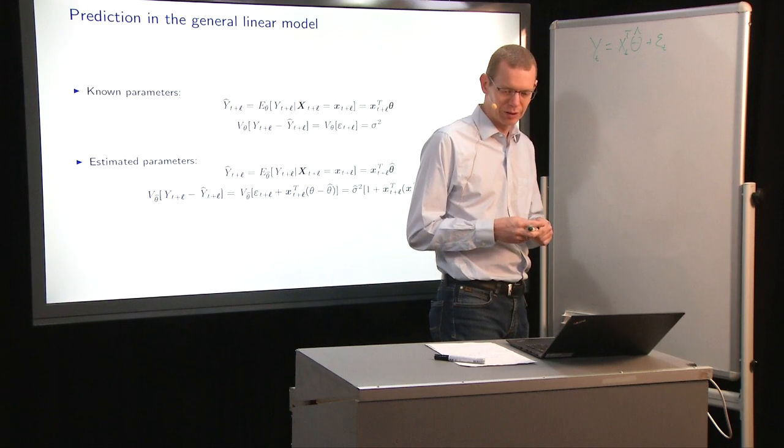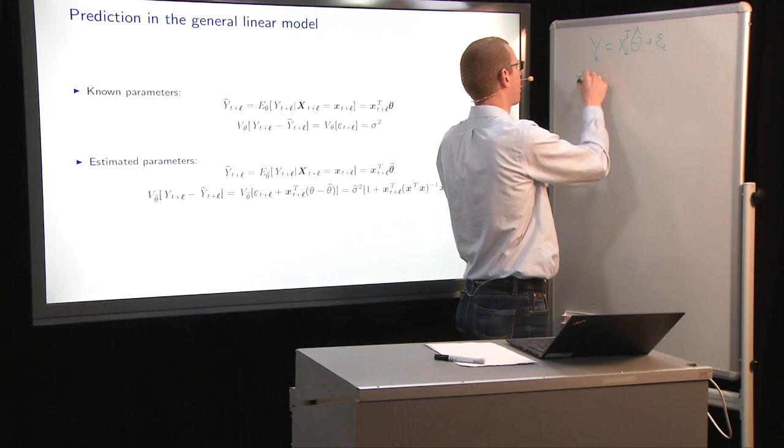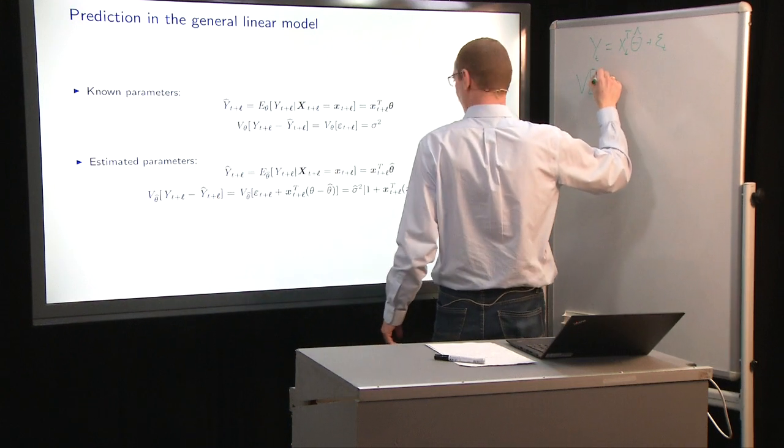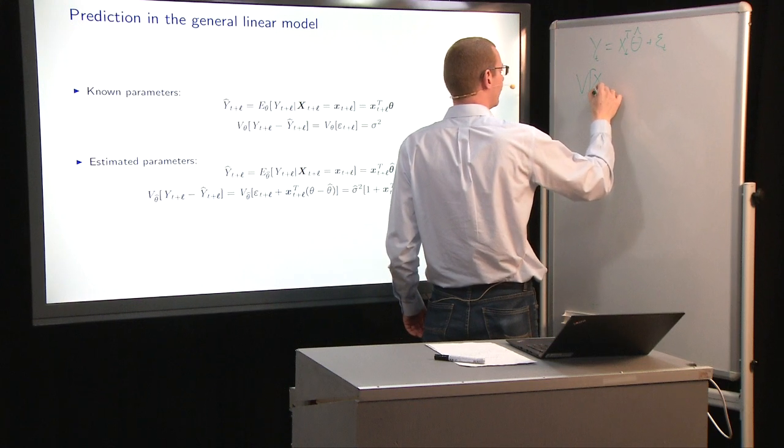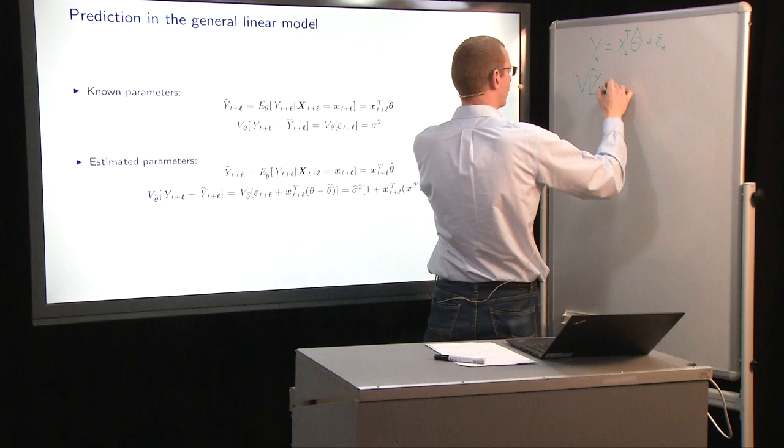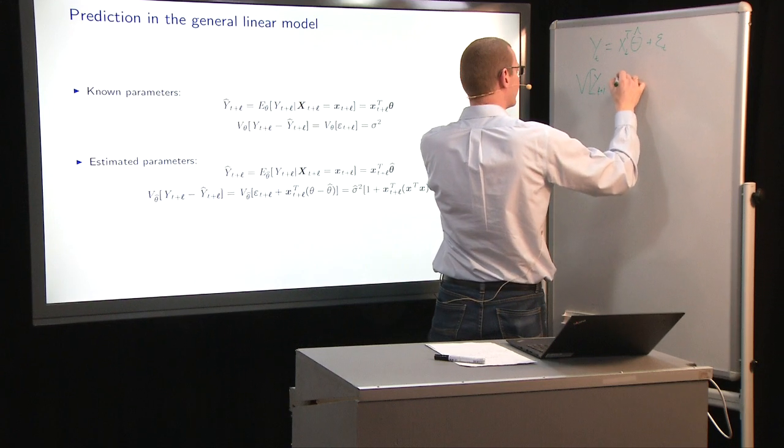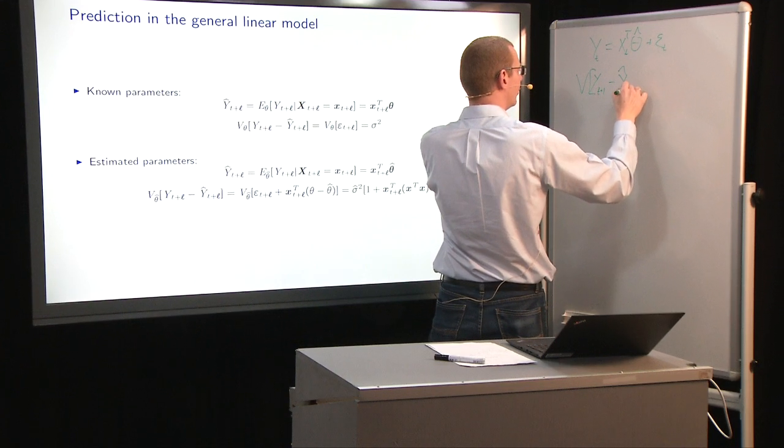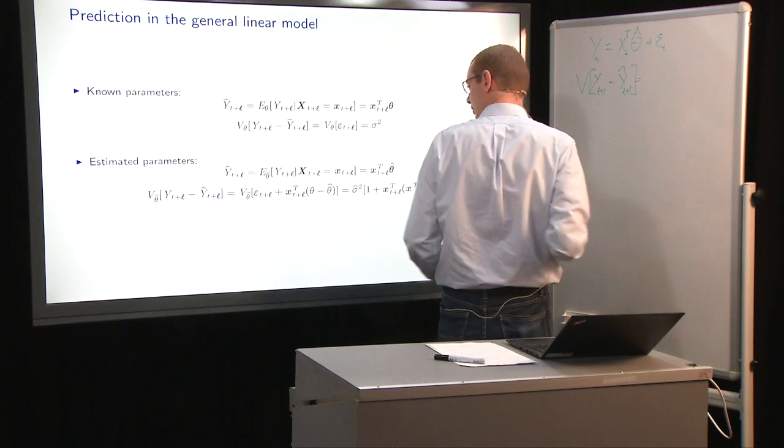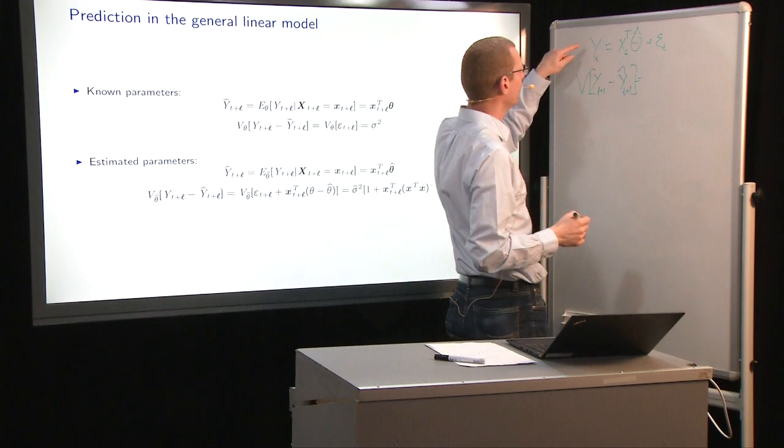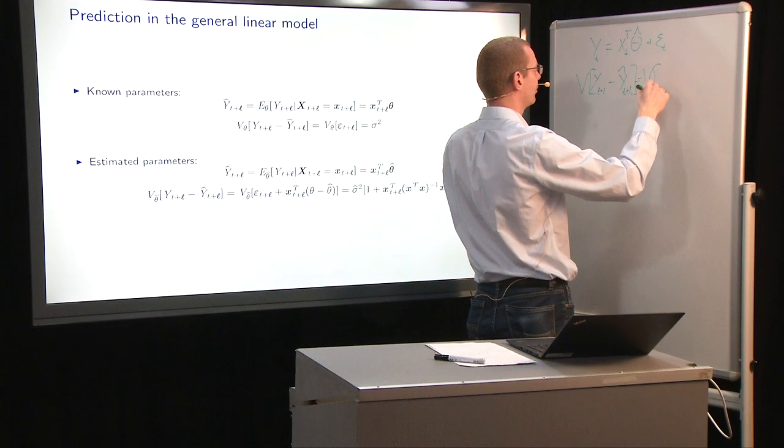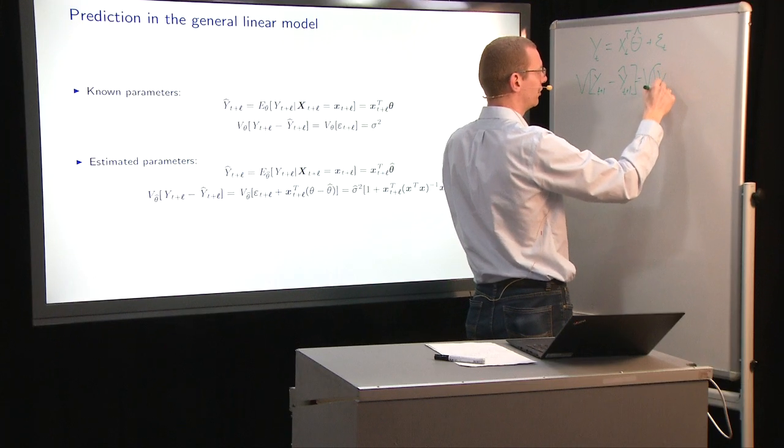So the variance of what we have here of Y t, t plus L minus Y hat t plus L, to have the same notation, is the variance, and now we just plug in what we have. It's the variance of the true observation, Y t plus 1, which is,